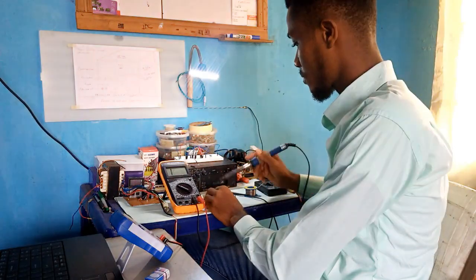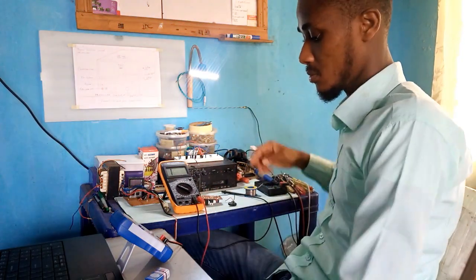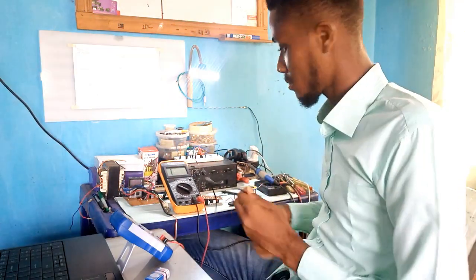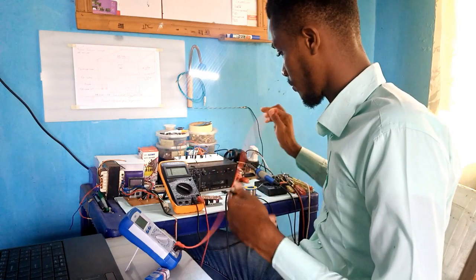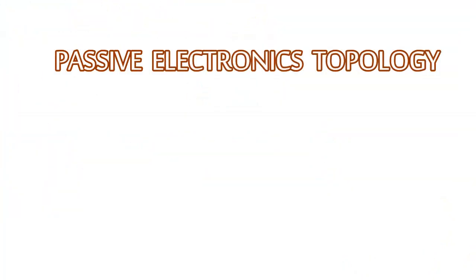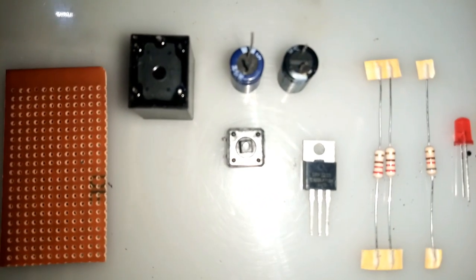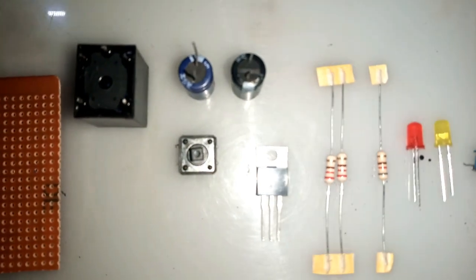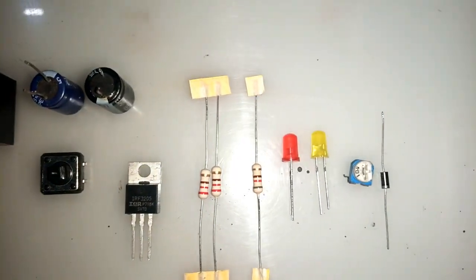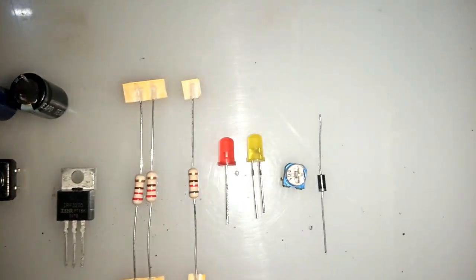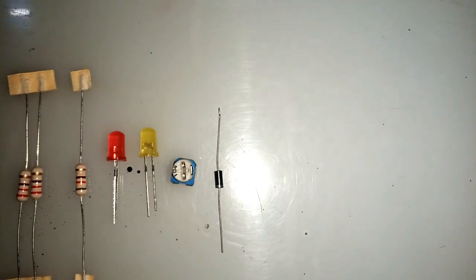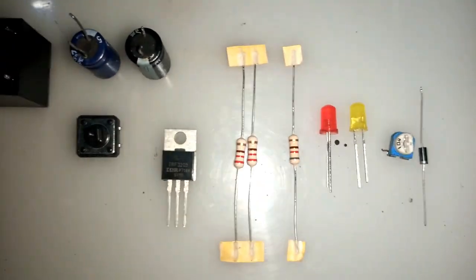How is a time delay switching circuit developed? Time delay switching circuits can be developed using passive electronics topology, integrated circuit topology, or microcontroller topology. Passive electronics uses components like resistors, capacitors, diodes, and many more. This topology is what we are going to focus on in this video demonstration.